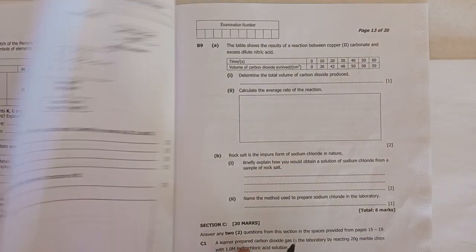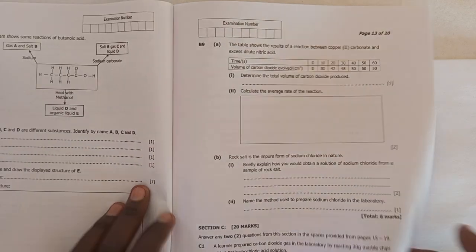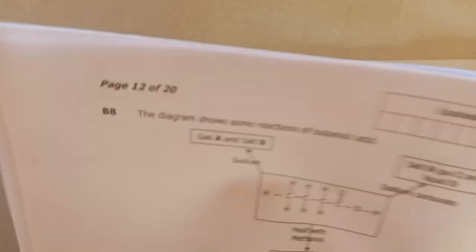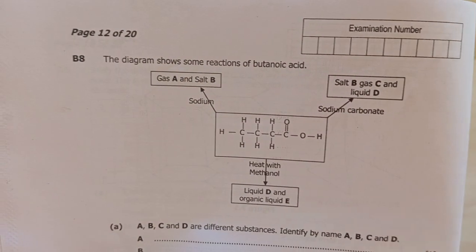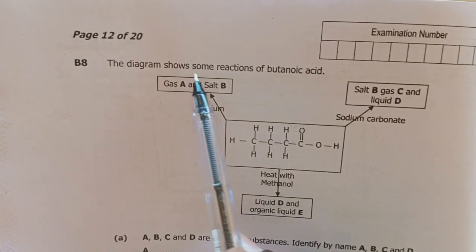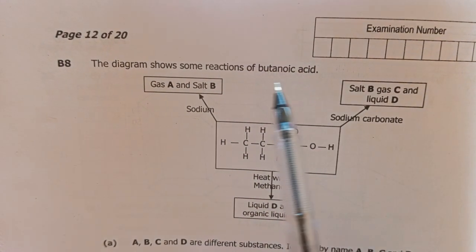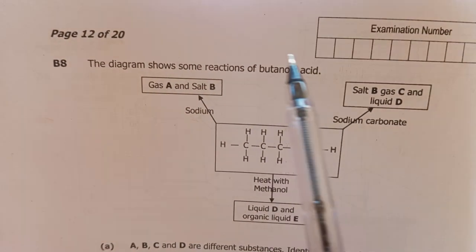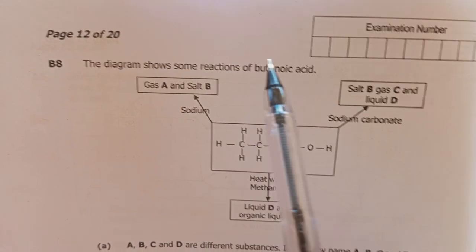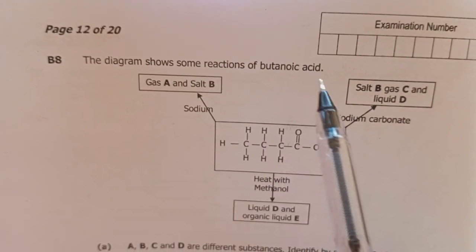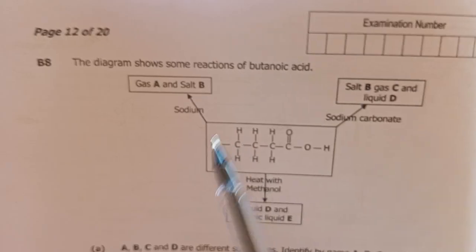May I suggest that you like the video, share it, and leave a comment. Question 8 says the diagram shows some reactions of butanoic acid. This is an organic acid, viewers, and you need to know its chemical formula.